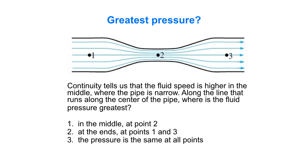So now let's talk about pressure. So continuity tells us the fluid speed is higher in the middle of this tube where it's narrower. What do you think about pressure? So along this center line where points one, two, and three are, where is the fluid pressure greatest? Which of those answers do you think is the best?